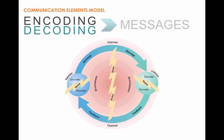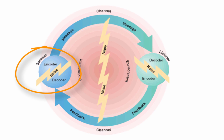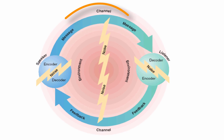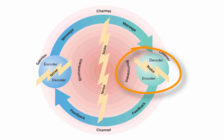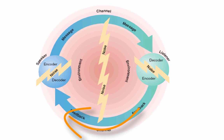If we take Ogden and Richards' triangle of meaning, the definition of encoding and decoding messages, and all these types of noise and try to make a big model of it, we get the communication elements model. We still have our speaker and our listener. The speaker encodes a message both verbally and non-verbally and sends it across the channel to the listener. The channel is the outer circle wrapping the entire model — the medium used to communicate, such as face-to-face, text, email, social media, or TV. The listener decodes the message, encodes their feedback, and sends it back across the channel. We keep encoding and decoding messages back and forth.